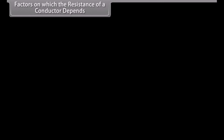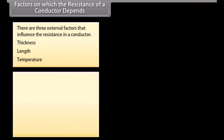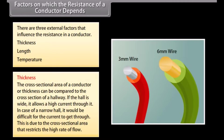There are three external factors that influence the resistance in a conductor: thickness, length, and temperature. There is also a fourth factor — the conductivity of the material — which is considered an internal factor. Thickness: the cross-sectional area of a conductor can be compared to the cross-section of a hallway. If the hall is wide, it allows a high current through it; if it is narrow, it is difficult for the current to get through.